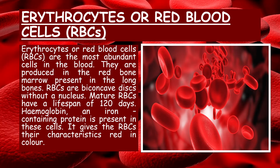Erythrocytes or red blood cells are the most abundant cells in the blood. They are produced in the red bone marrow present in the long bones. RBCs are biconcave discs without a nucleus. Mature RBCs have a lifespan of 120 days. Hemoglobin, an iron-containing protein, is present in these cells and gives the RBCs their characteristic red color.